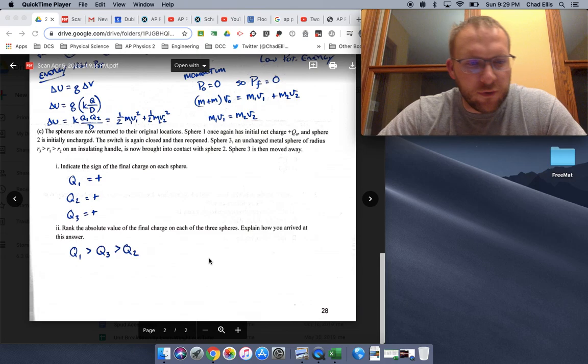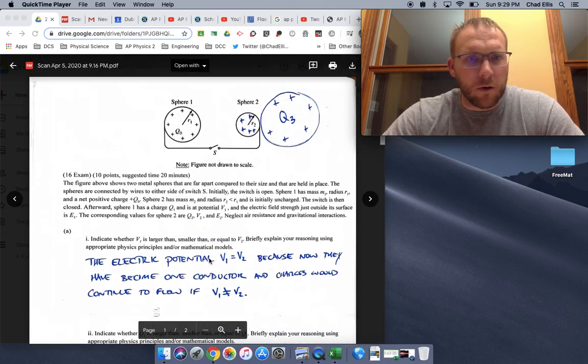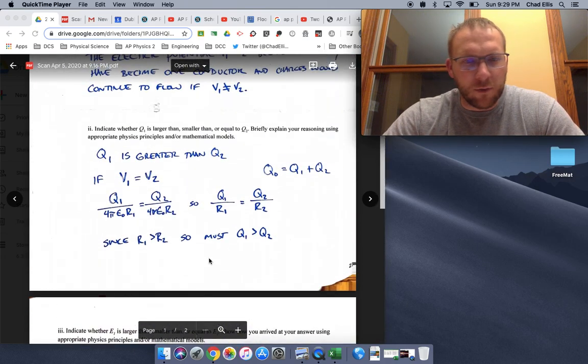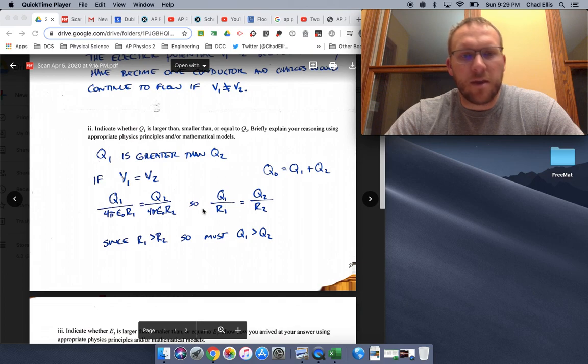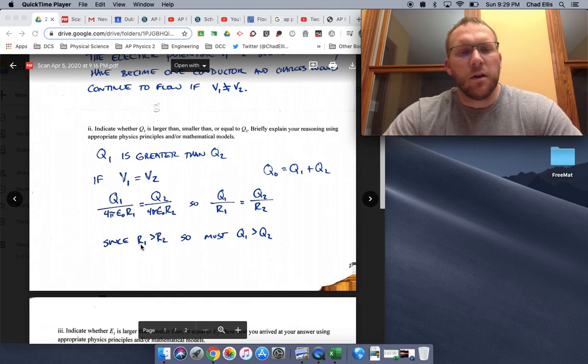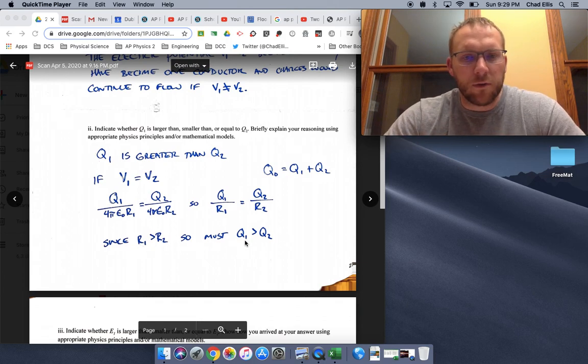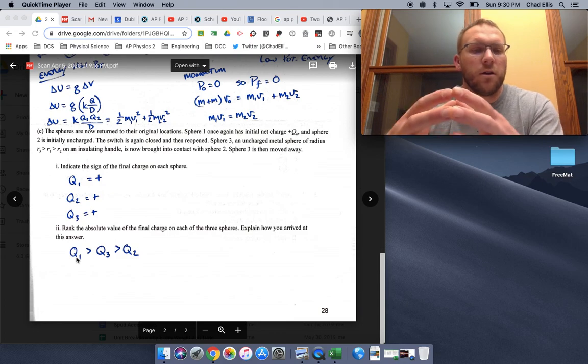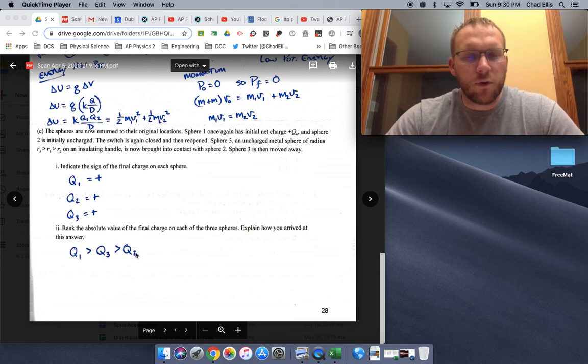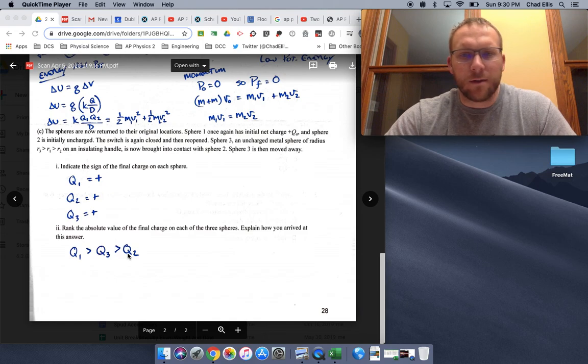Rank then the absolute value of the final charge. Well, here's what we know. We already said Q one is greater than Q two for the purpose that their electric potentials are the same and that it's a ratio of their charge to their radius. So because the bigger radius of R one, the charge must also be bigger on R one. So here's how I broke this down. Q one is the biggest. Then the charge on two is going to be split between three and two.